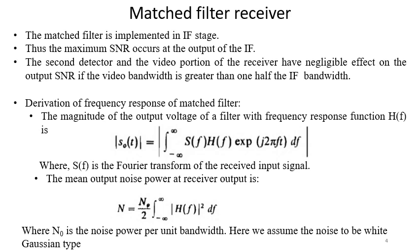The matched filter is implemented in IF stage. Thus, the maximum SNR occurs at the output of the IF. The second detector and the video portion of the receiver have negligible effect on the output SNR if the video bandwidth is greater than one half of IF bandwidth.